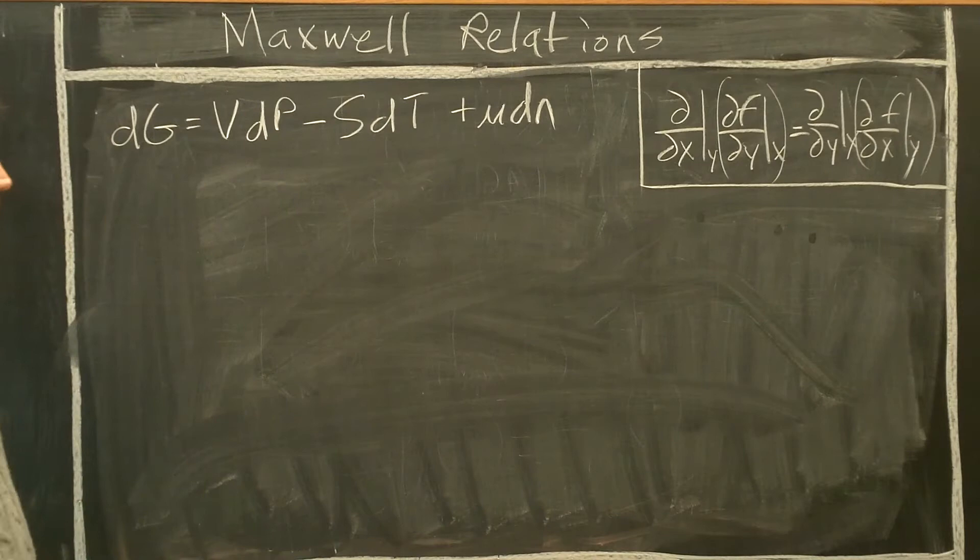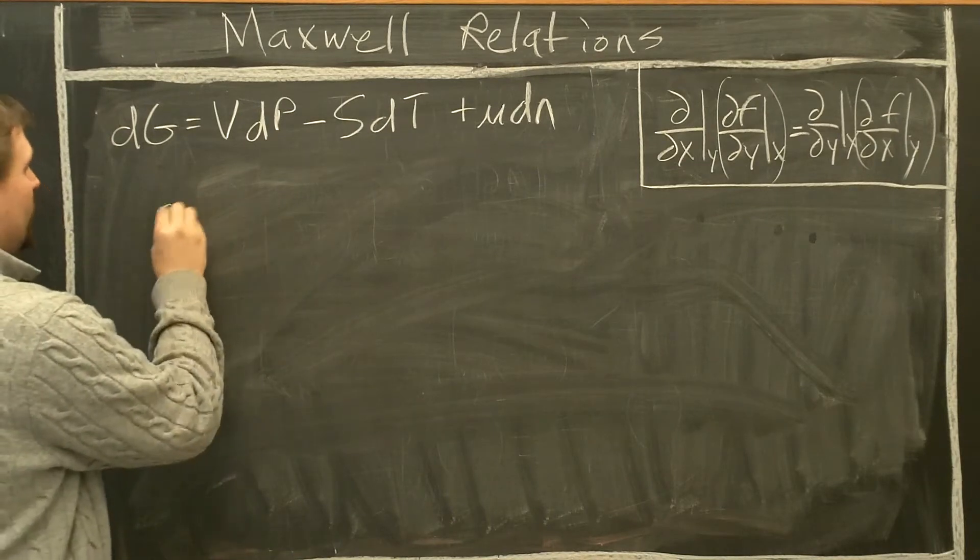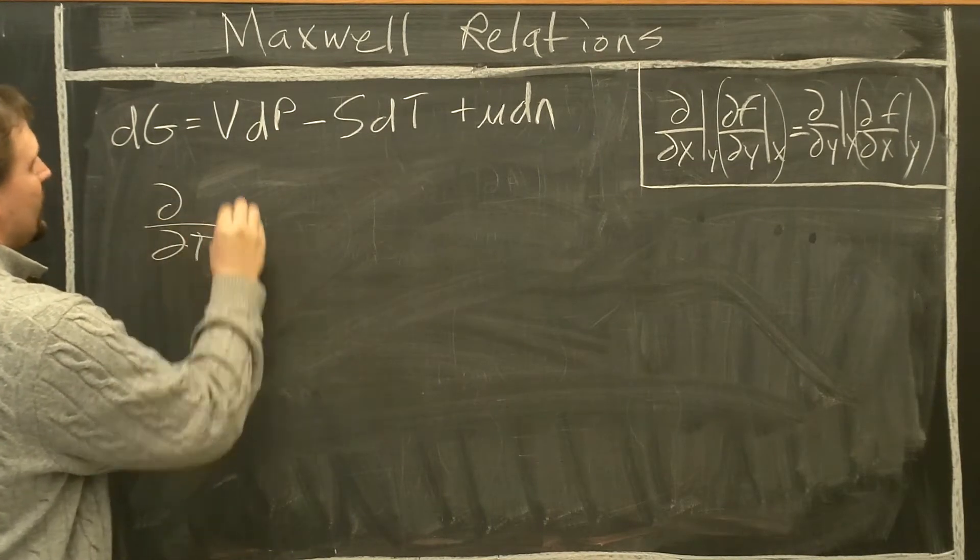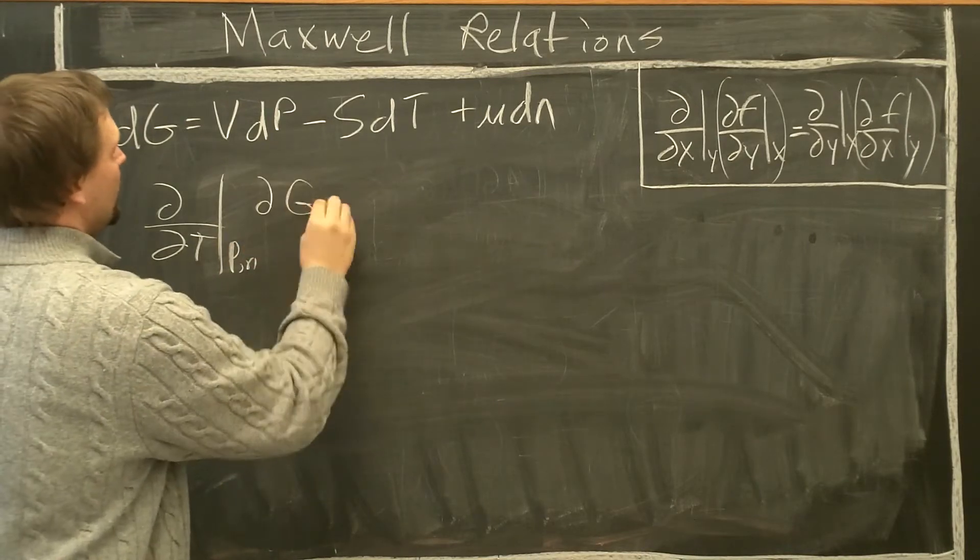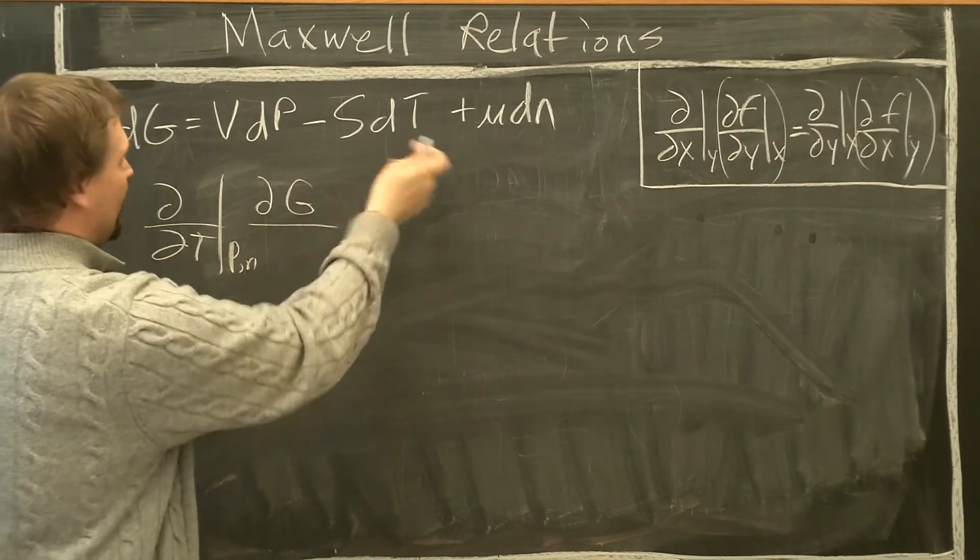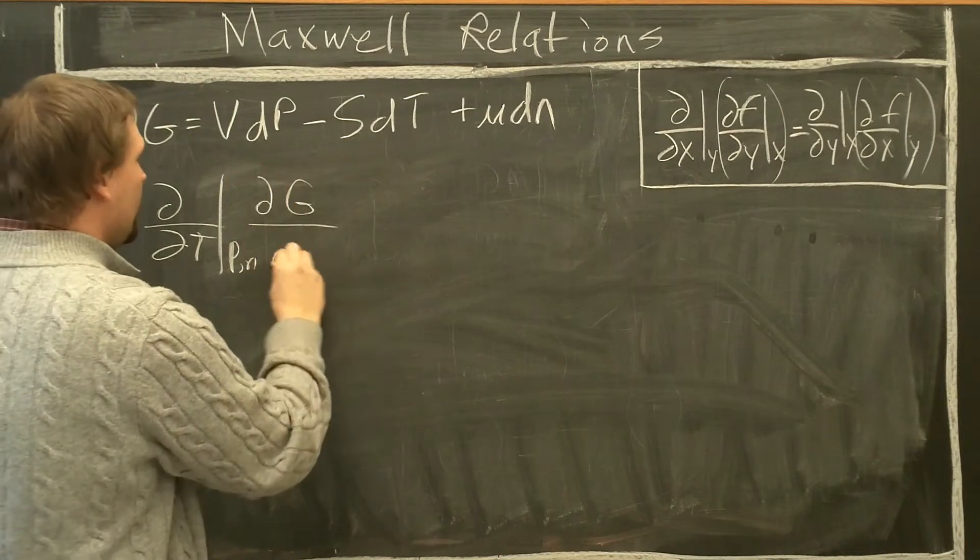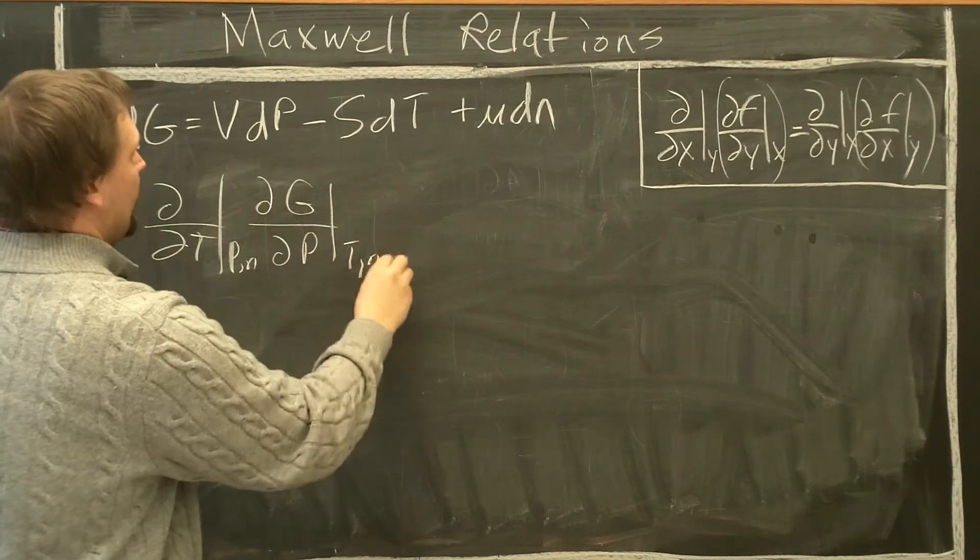So why don't we start this? Like the other problems, partial with respect to partial T, constant P and N, of partial G with respect to the other variable we're interested in, in this case it's P, constant T and N.